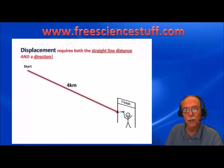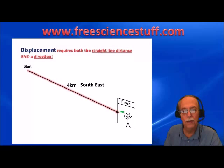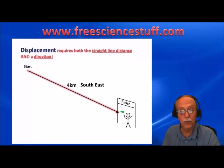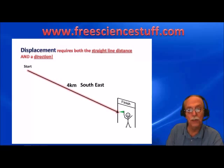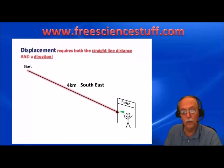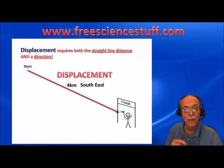There's the starting line, there's the path he traveled, and there he is at the finish line — where he was disqualified for taking a shortcut. He traveled four kilometers, but as the arrow shows, he didn't just travel four kilometers — he traveled four kilometers southeast. Understanding that on your screen north is toward the top, south toward the bottom, east to the right, and west to the left. His displacement was four kilometers southeast.